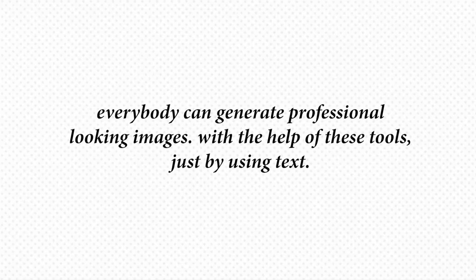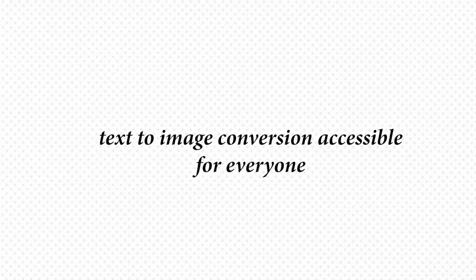Effective communication is crucial in academia, and nowadays creating engaging and effective images is not a big deal. It's an advancement in AI because everybody can generate professional-looking images with the help of AI tools just by using text. In this video, I'm going to introduce you to three very user-friendly platforms including Napkin, Vislee, and Canva that will help you generate content and make text-to-image conversion accessible for everyone — no designing skills needed.